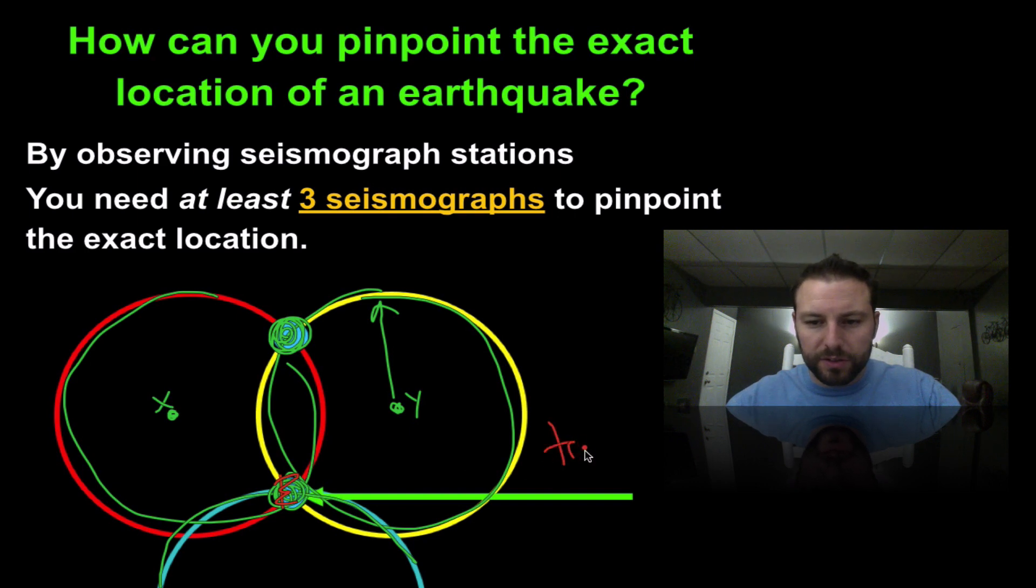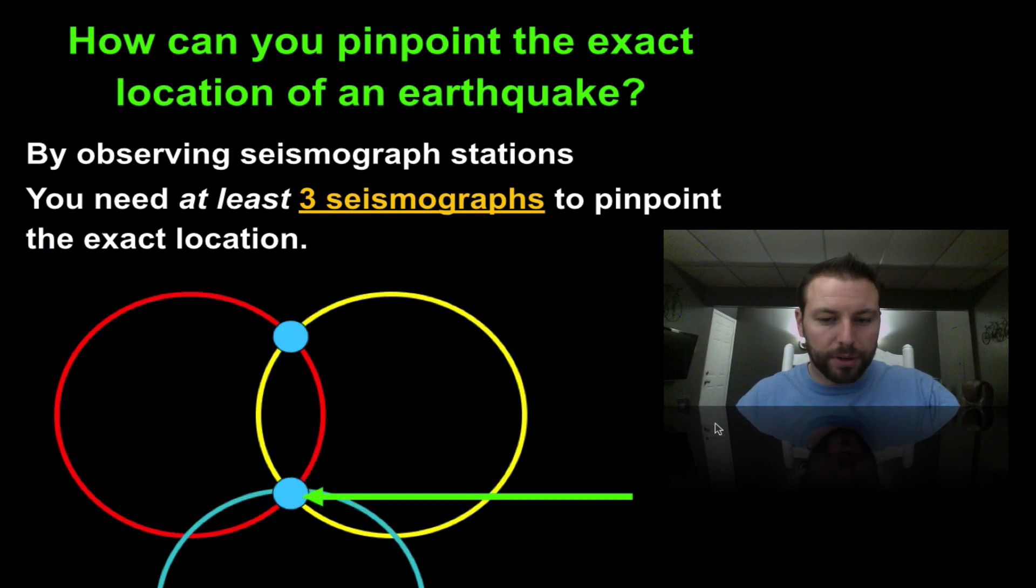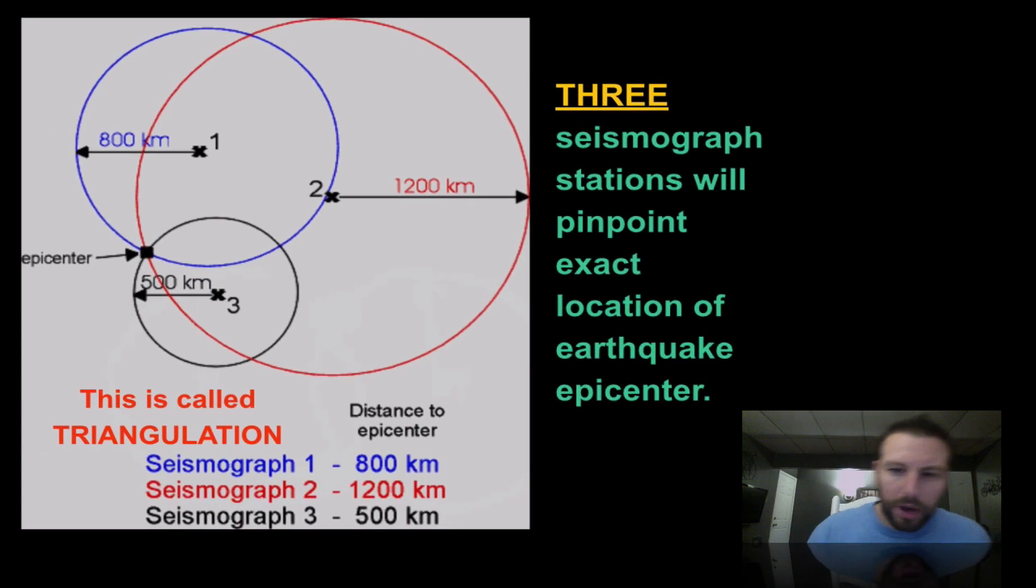So this process is known as triangulation, and it's a way of finding the epicenter of an earthquake. Here you go, once again, this is the three seismographs, and you can see that when we look at the three circles, they don't have to be an equal distance apart from the actual epicenter, but we have one, two, three locations where they intersect. That is where the epicenter is.